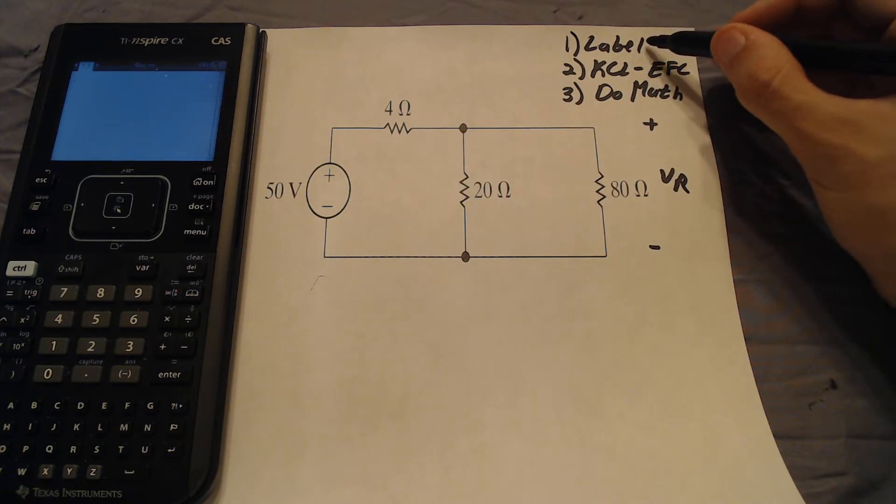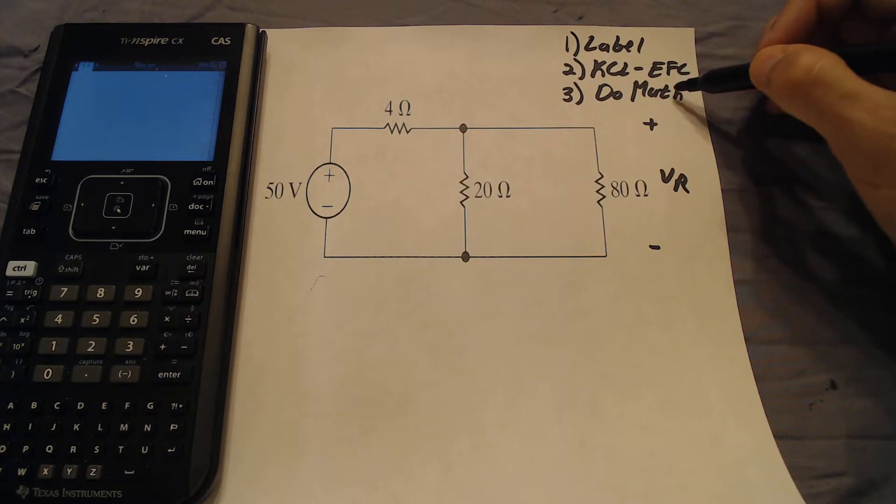We must label the circuit, we must perform KCL and EFC on the circuit, and lastly, we must perform math on the circuit to get the actual numerical values associated with the circuit.